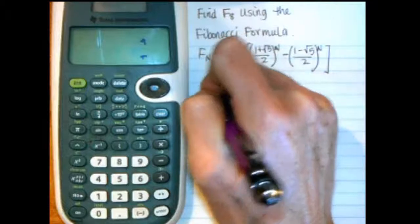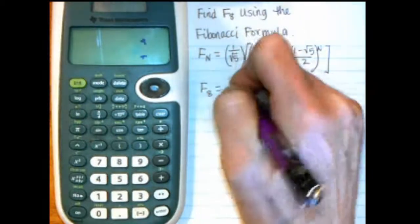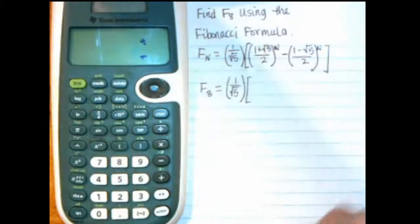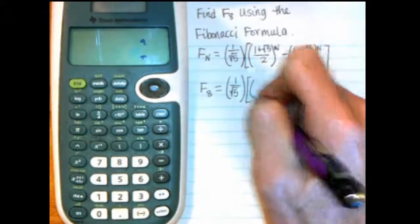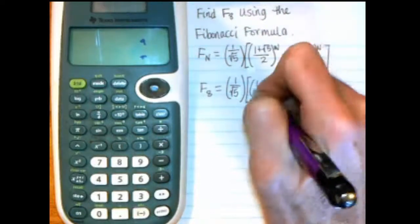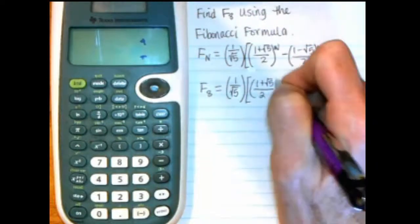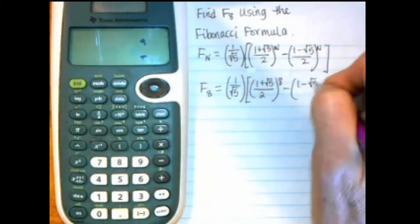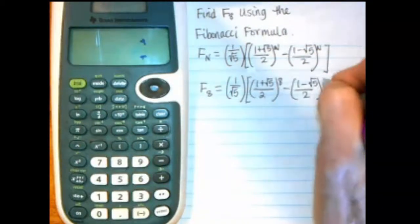So I'm going to do F sub 8 equals, wherever the big N is, I'm just putting in an 8. And just wherever I see the N, I'm going to put in the 8. So over 2 to the 8th power.